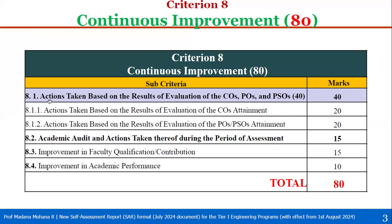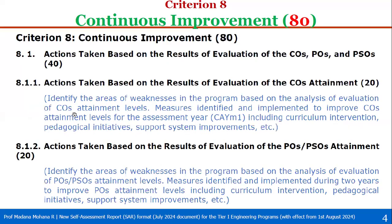Now let us see all these sub-criterias, SAR Format. First, 8.1, Actions Taken Based on the Results of Evaluation of the Course Outcomes, Program Outcomes and Program Specific Outcomes, Total 40. Again, this is divided into the following two sub-criterias. The first one, 8.1.1, Actions Taken Based on the Results of Evaluation of the Course Outcomes Attainment, 20 marks.